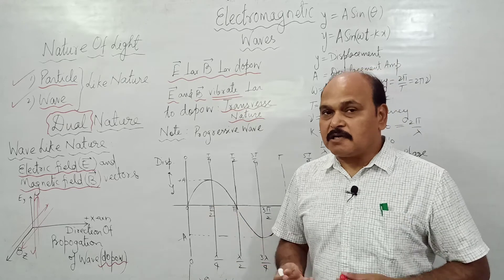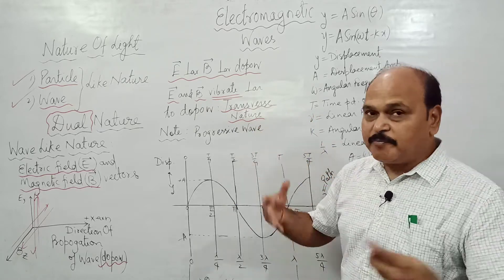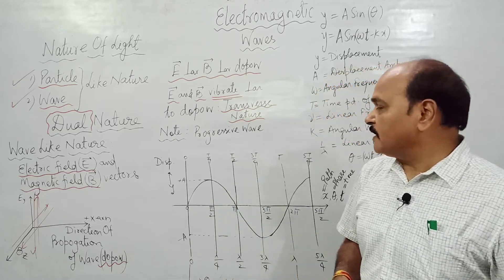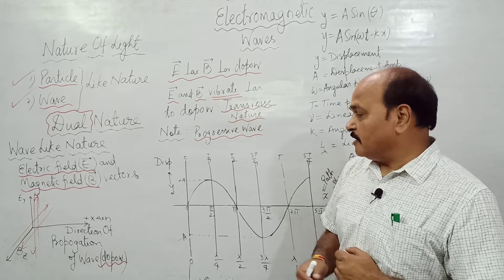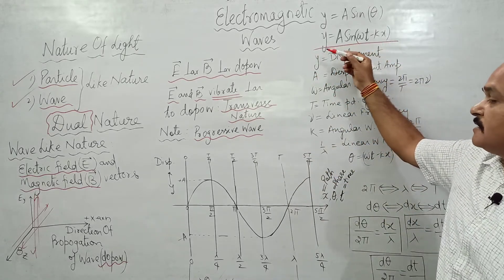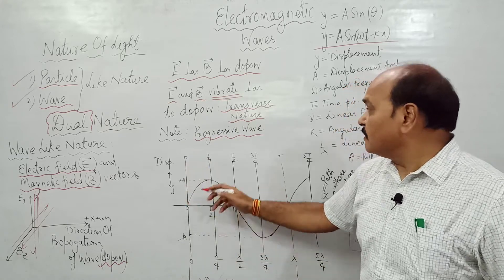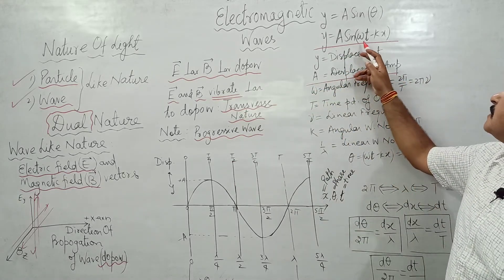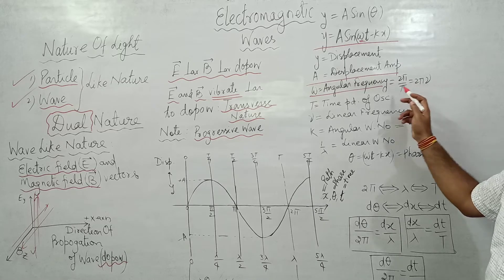To understand further the wave nature of light, we have to recapitulate the concept of wave mechanics studied in Class 11. We studied progressive wave in one dimension, mathematically written as y = a·sin(ωt − kx). Here y is the instantaneous displacement, a is the displacement amplitude, ω is the angular frequency which equals 2π/T or 2π·ν, where T is the time period of oscillation.